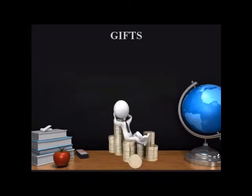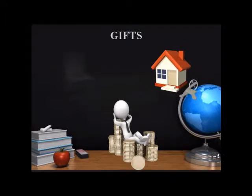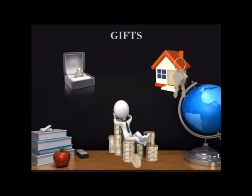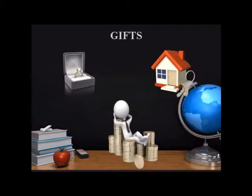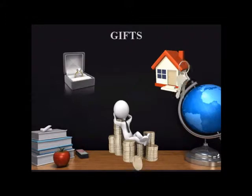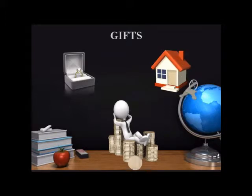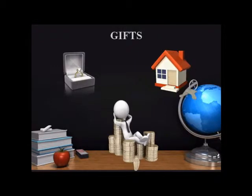Gifts can be given absolutely, placed in trust or subject to a contingency. For example, I leave £5,000 to my grandson Jimmy absolutely if he attains the age of 21. You can make different types of gifts in your will, including specific gifts, pecuniary gifts, demonstrative gifts, general gifts and residuary gifts.